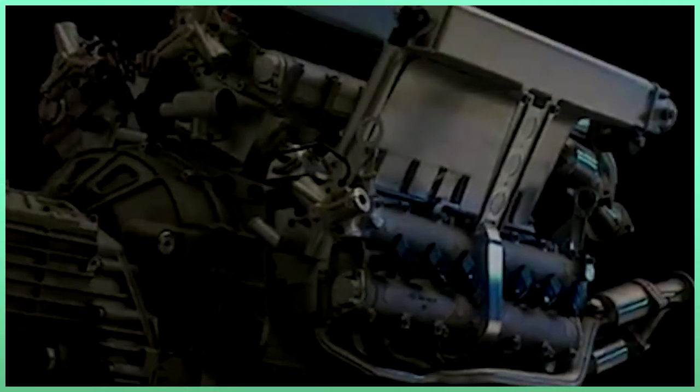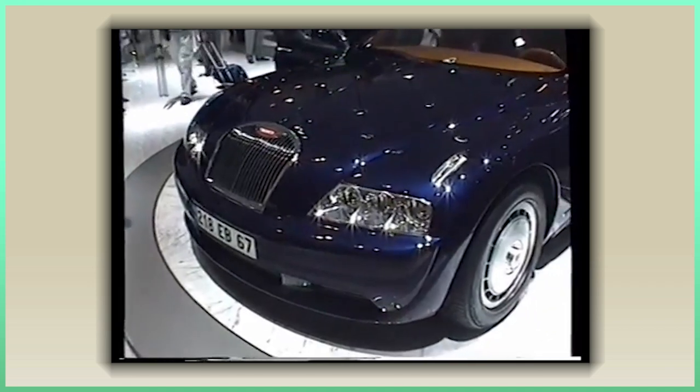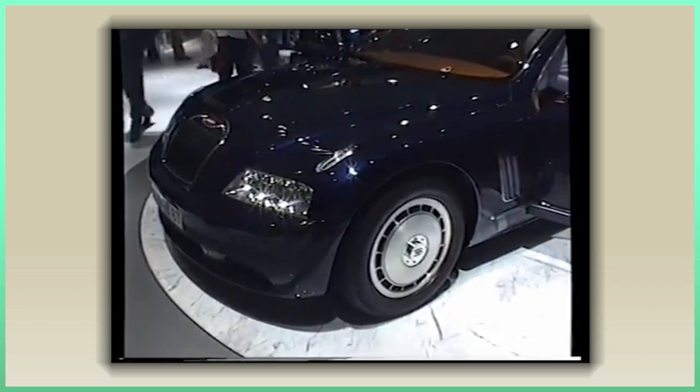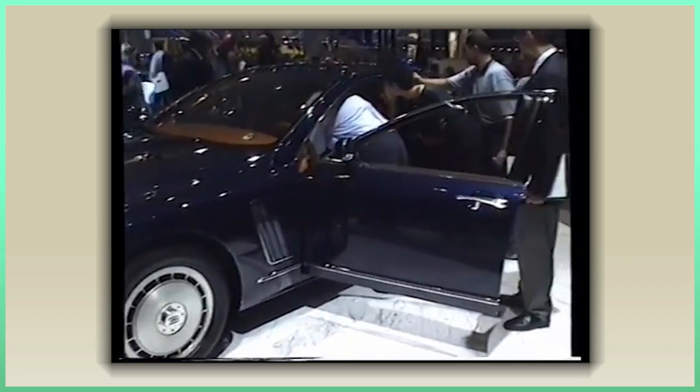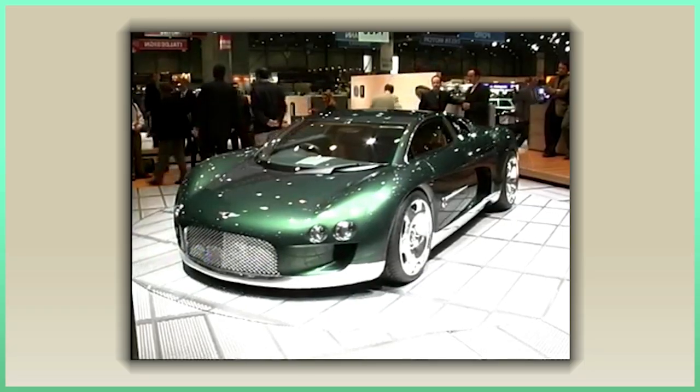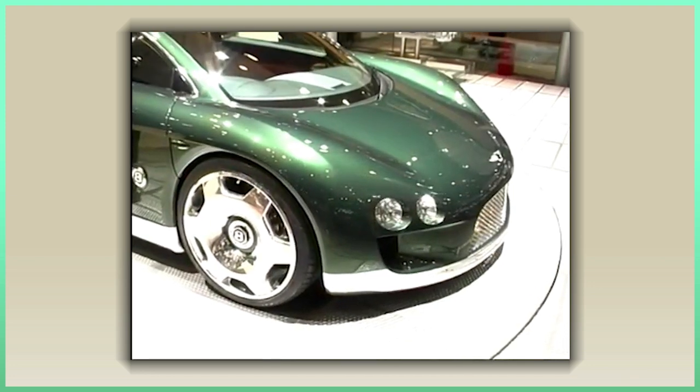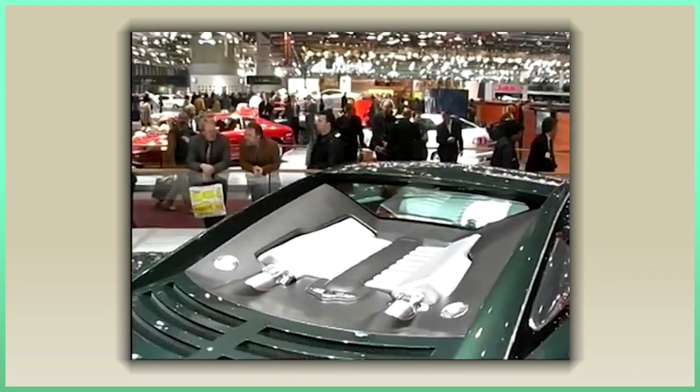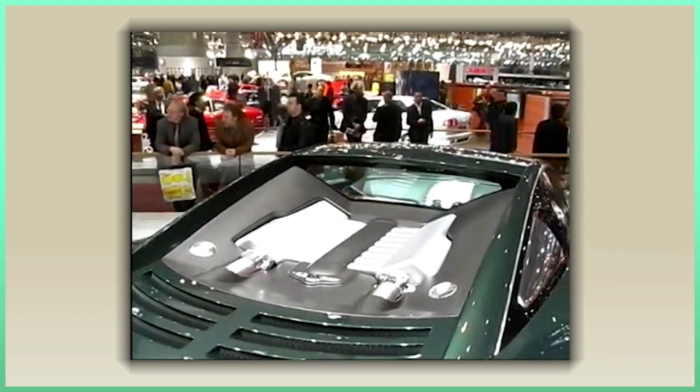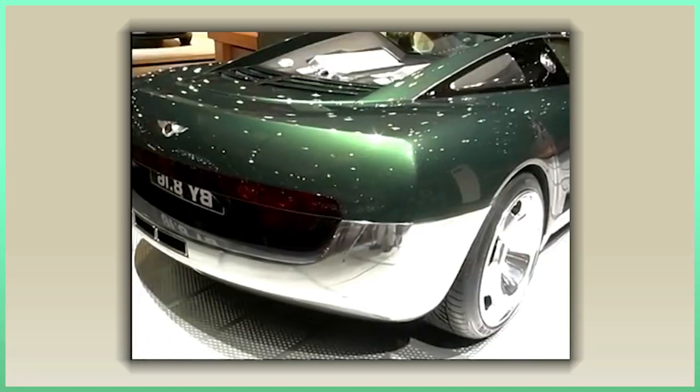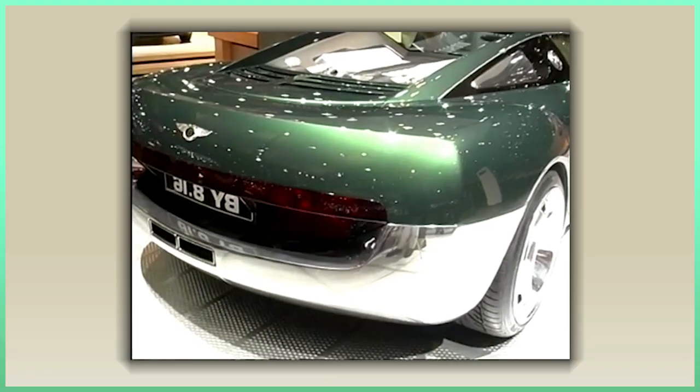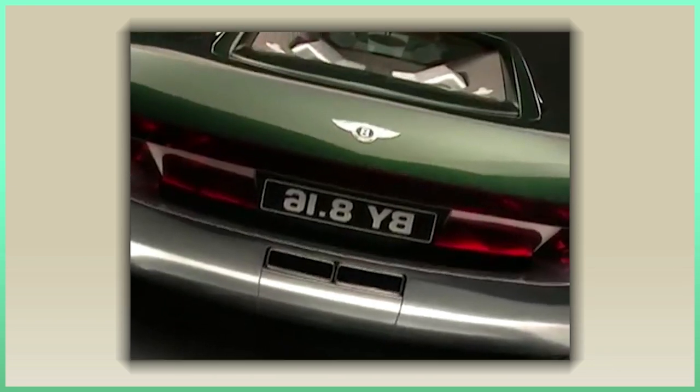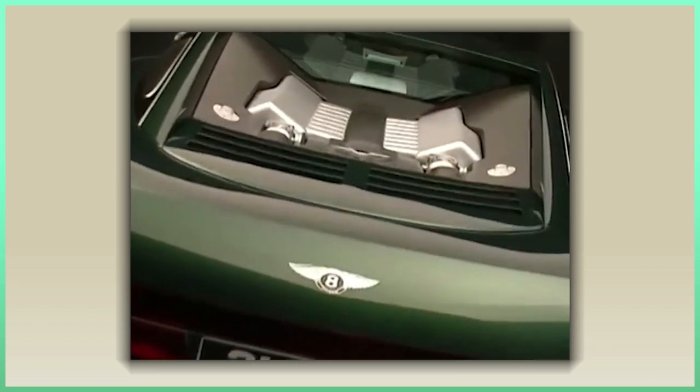While one year later, at the 1999 Geneva Motor Show, came the EB218, which was the 4-door version of the EB118. But the star of the show was the Hunaudières of Bentley. The Hunaudières basically would set the plans for the future. The Hunaudières was powered by the 8-liter W16 with 625 horsepower. The car got a lot of attention, but Volkswagen had no real plans to put this car into production, since Bentley was supposed to be the luxury brand, while Bugatti and Lamborghini were supposed to be the high-performance ones.